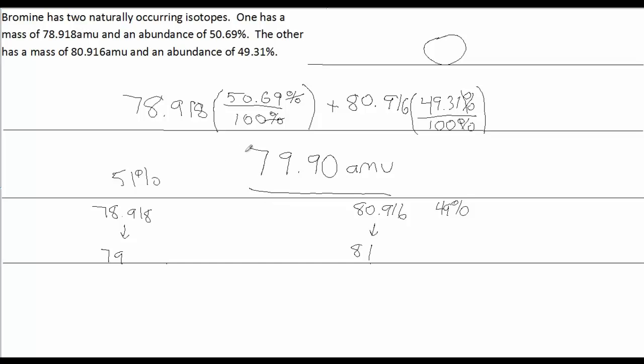Our answer, I hope this makes sense to you. Our answer should be closer to 79 than 81, because our abundance for 79 is slightly greater than our abundance for 81, which is only 49 percent. If we had to draw like a middle line here, this will be 80.5, halfway between 79 and 81. Well, 79.9 would be somewhere right about there, which is closer to 79. Hence, we're rationalizing why our answer is 79.9, which is closer to 78.918 than it is to 80.916.